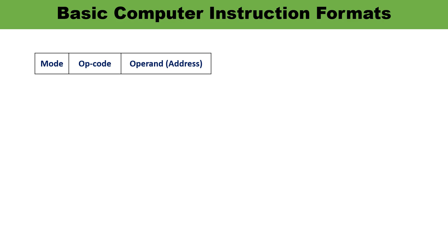As you can see, this is the basic computer instruction format with three fields. The address starts from bit number 0 to 11, the opcode is from bit number 12 to 14, and the mode is for bit number 15.